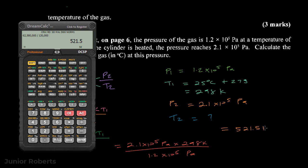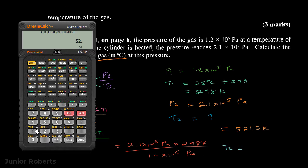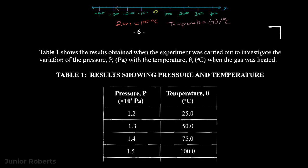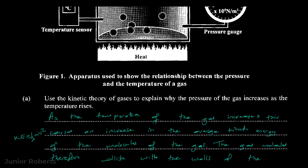T2 = 521.5 kelvin. However, the question asks for the temperature in degrees Celsius, so we convert: T2 in °C = 521.5 − 273 = 248.5 degrees Celsius. That will be our answer, and that completes question one. If there are any questions, post them in the comments below and I will do my best to answer them and clear up any misconceptions. Thank you for watching.